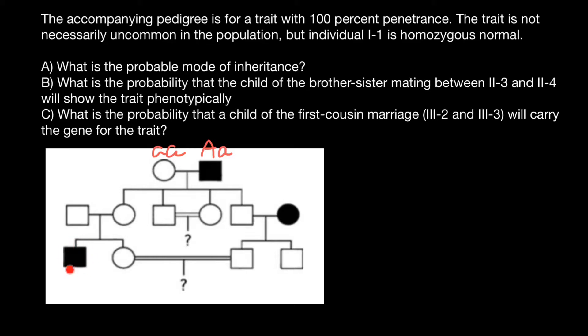In order for this male here to be affected, he has to inherit the dominant allele, and we see that he cannot get this dominant allele from any of his parents. His mother would have had to inherit it from her father, but her phenotype is normal, so that means she has two recessive alleles. So this is not an autosomal dominant genetic disorder.